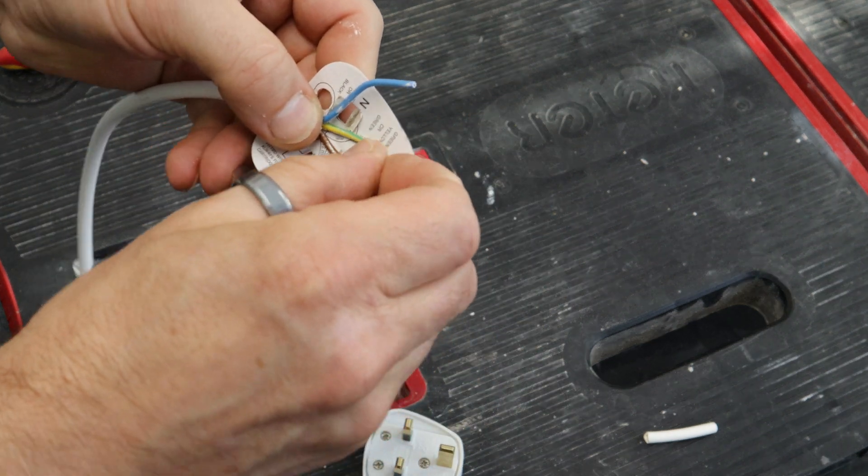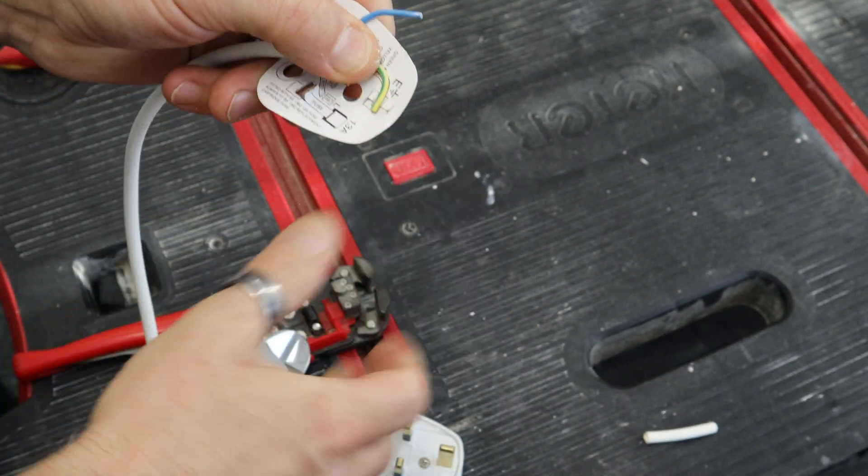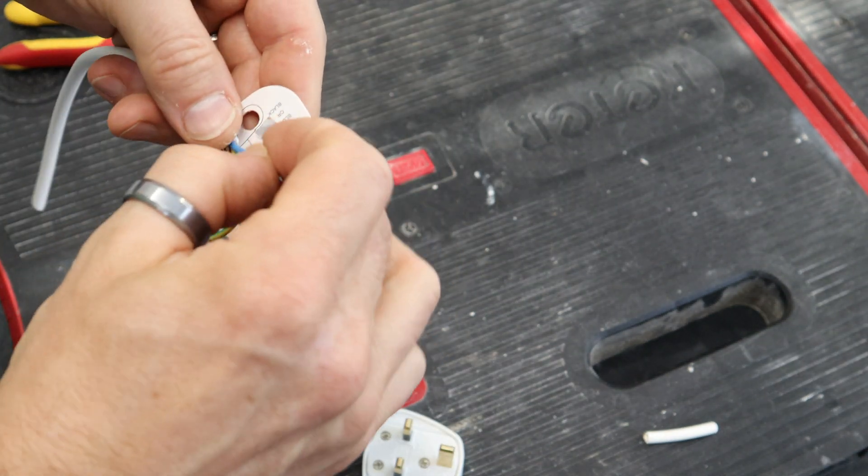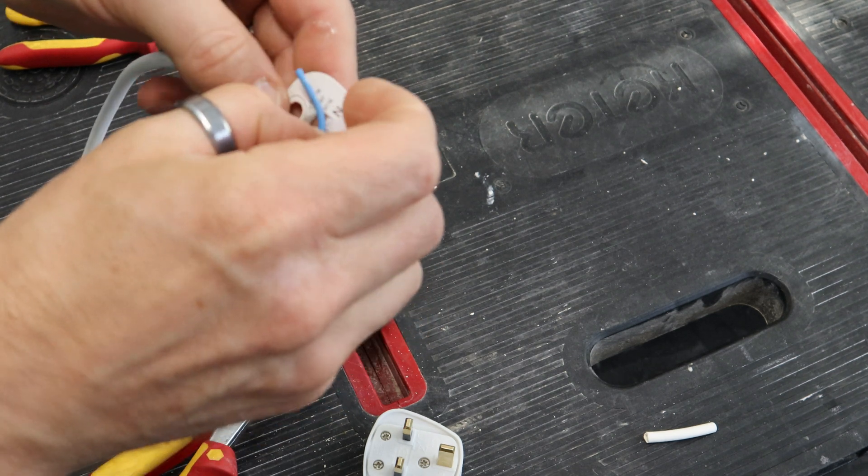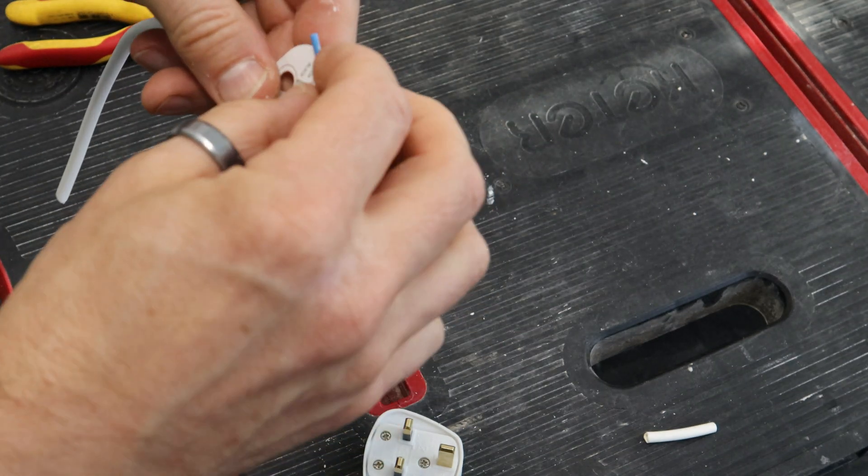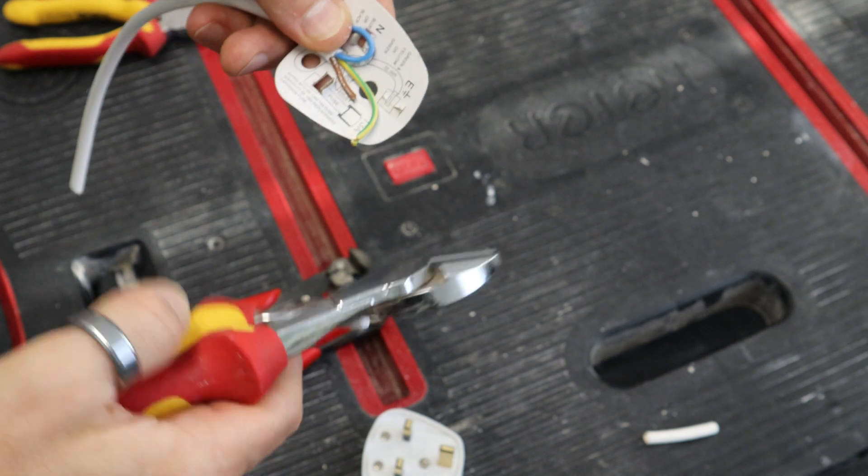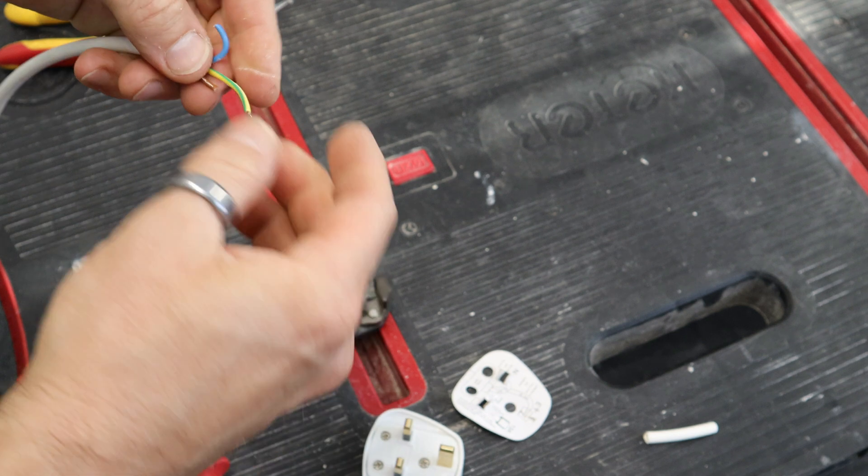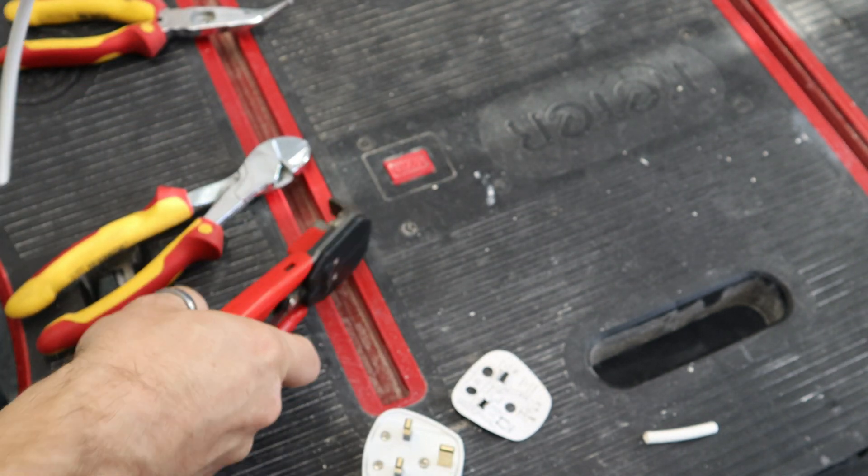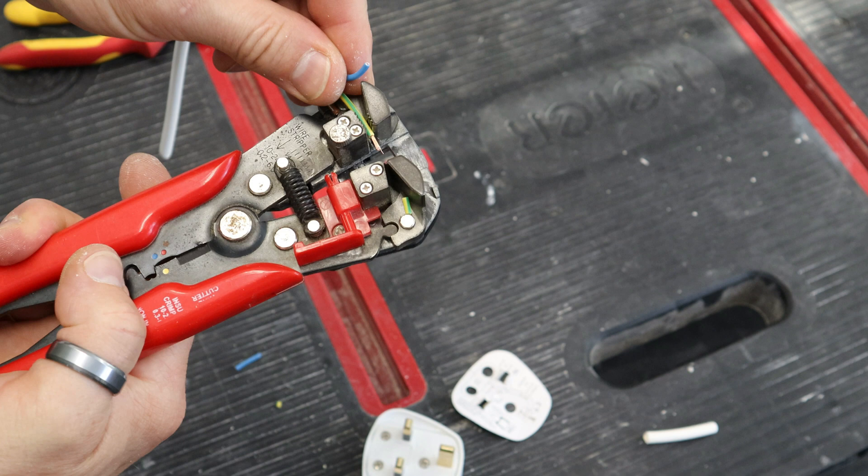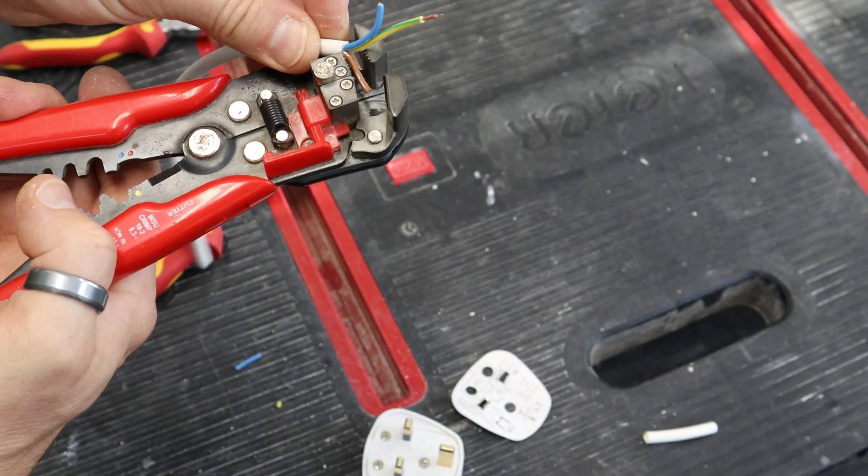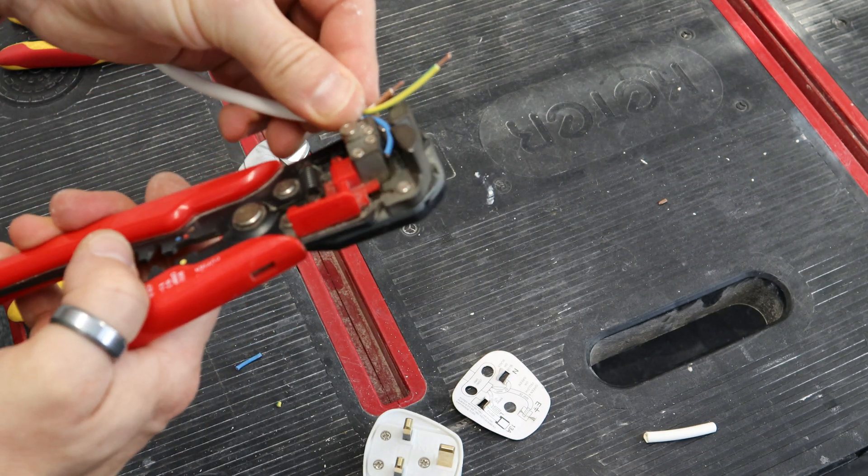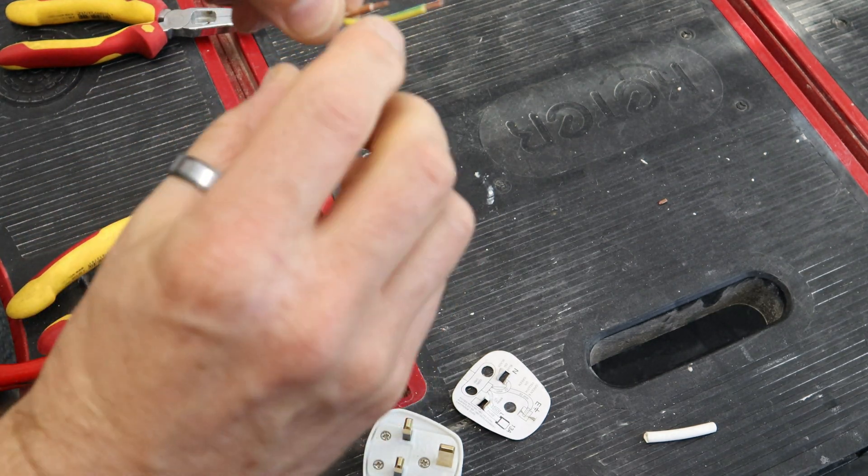Similarly with the earth, which is nearly there already, and the neutral, sometimes be a little bit fiddly. Now we take the snips again and just take off the ends. Need a few millimeters, and then just twist the core together.